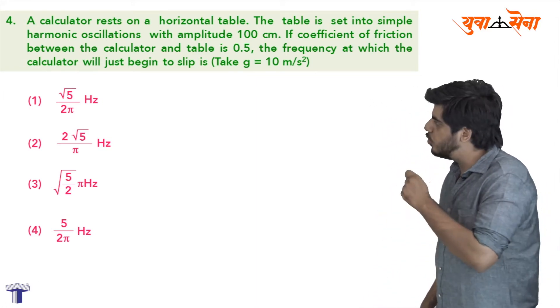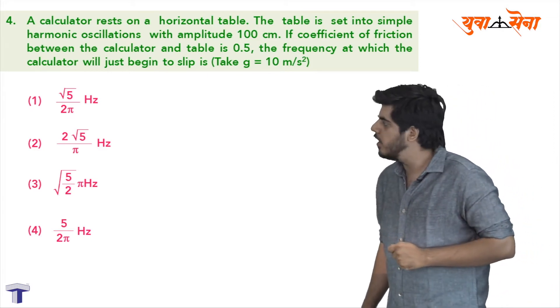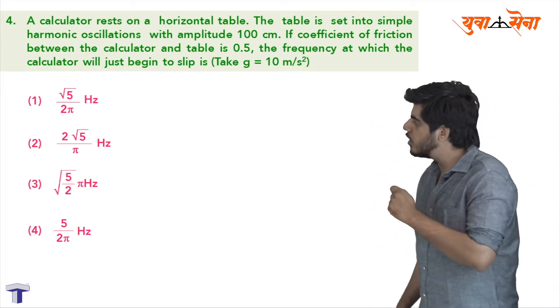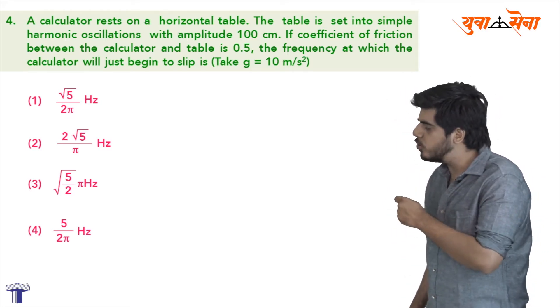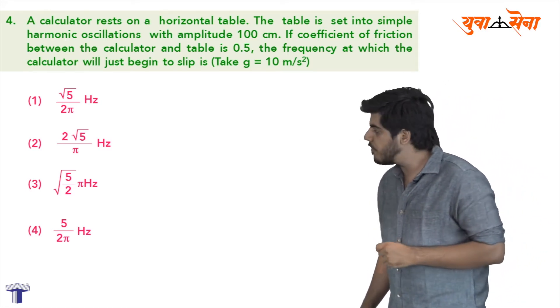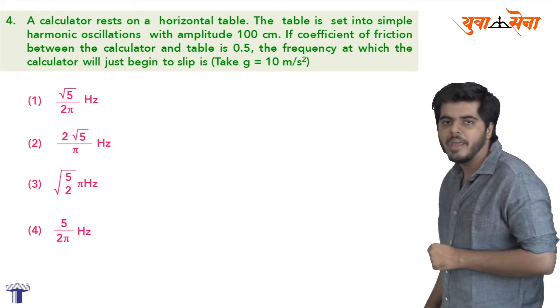Option one is root 5 upon 2 pi hertz. Option two is 2 root 5 upon pi hertz. Option three is root of 5 by 2 pi hertz. Option four is 5 upon 2 pi hertz.